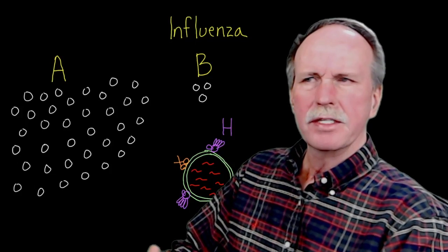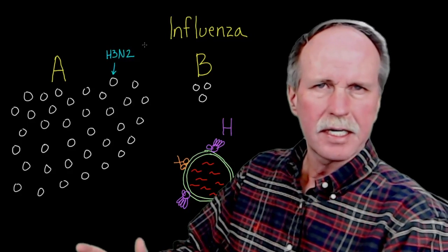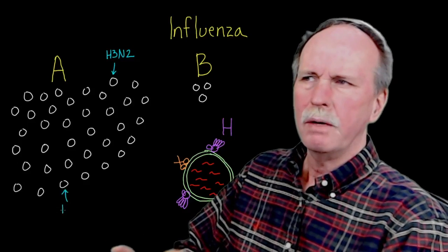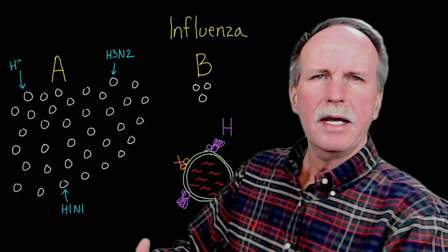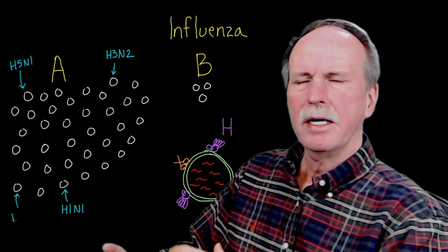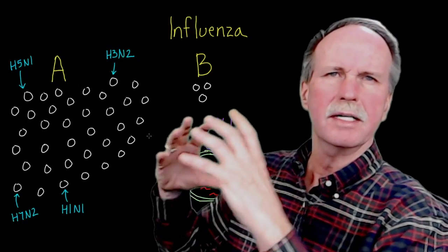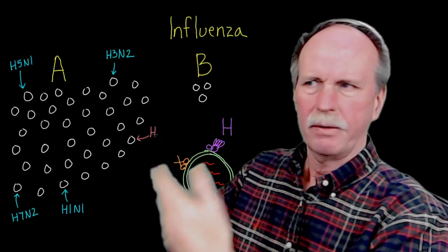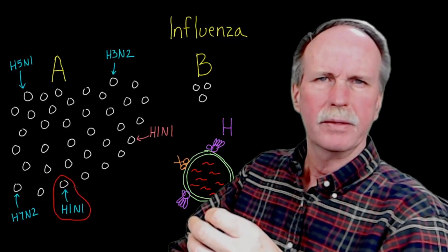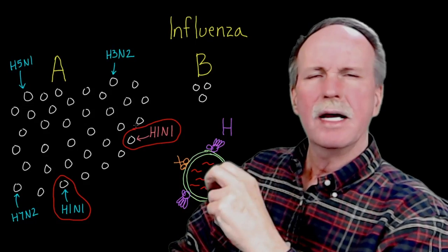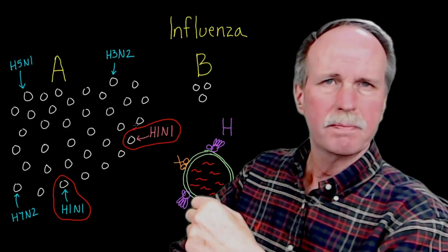H1N1 influenza is a very common cause of disease in humans — it's the cause of seasonal flu and normally a pretty self-limited disease, with a mortality rate of about 0.1%. There are two basic ways that we get new strains of flu. First, an H1N1 influenza can undergo a mutation to become a more virulent strain — it's still H1N1 because it has the same glycoproteins on the outside. So we have a run-of-the-mill seasonal flu, and then we get a novel H1N1 that may be particularly virulent and cause a widespread epidemic, or it may just be another seasonal flu.